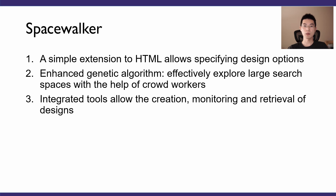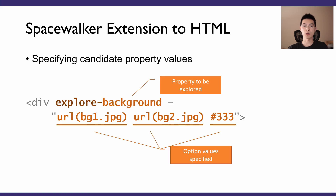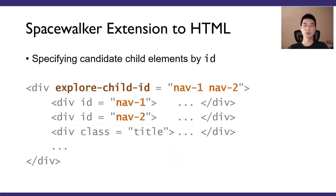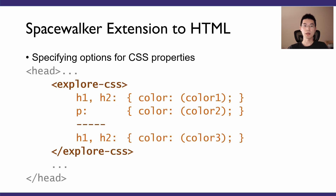Next, I will introduce the three main components of Spacewalker. First, Spacewalker supports easy-to-understand extensions to HTML. Using the Spacewalker Markup extensions, a user can easily include property values, different DOM elements, and CSS-style options for the system to explore. For example, to specify multiple candidate property values, a user can simply prefix a property name with 'explore' and list the values separated by spaces. To explore child DOM elements, a user needs to tag the child elements with IDs and specify these IDs in the parent element's explore-child-ID property. To specify CSS designs, a special explore-CSS tag is allowed in the HTML head section, where users can specify different CSS designs separated by any number of horizontal dashes.